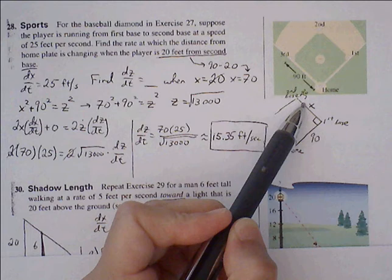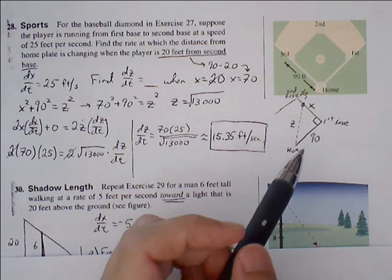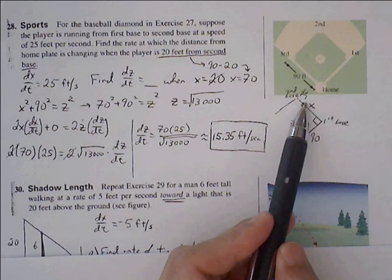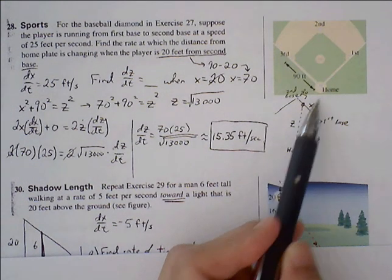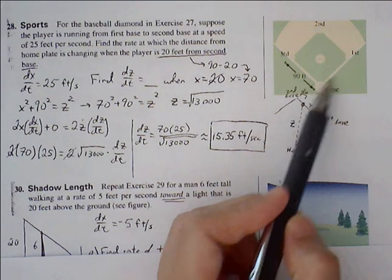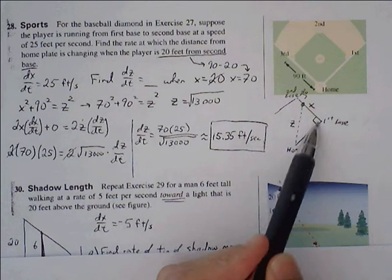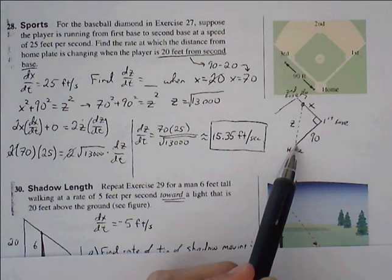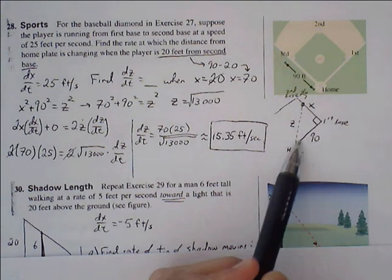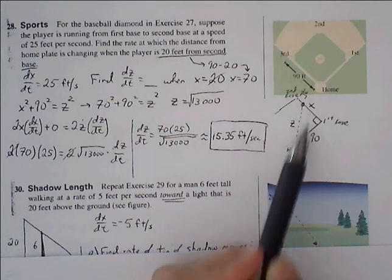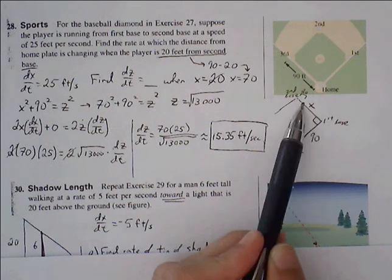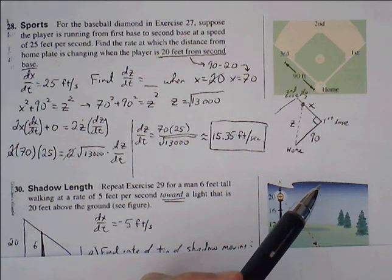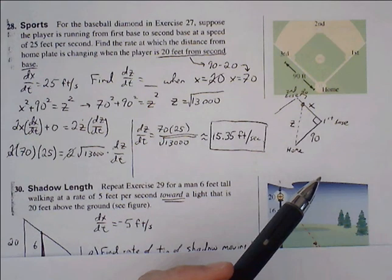At this moment in time, we want to find the rate at which the distance between home plate and the player is changing. The path between first and second base versus the path between home plate and first base creates a 90-degree angle, so we have a right triangle. The distance between home and first base is a constant value of 90. We call the runner's distance from first base x, and the hypotenuse z.